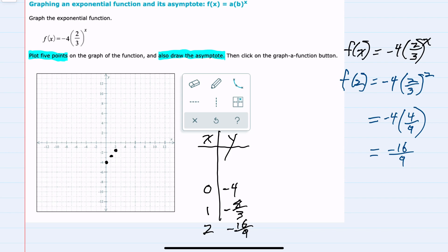And then I should also substitute in some negative values. So starting with x equals negative one, to evaluate that negative exponent, I would take the reciprocal of two-thirds, which is three-halves, and then make that exponent positive. Simplifying now, we have negative four times three-halves, which is negative twelve-halves, or negative six. So we have the point negative one, negative six.